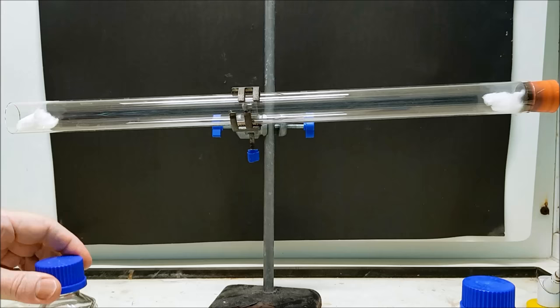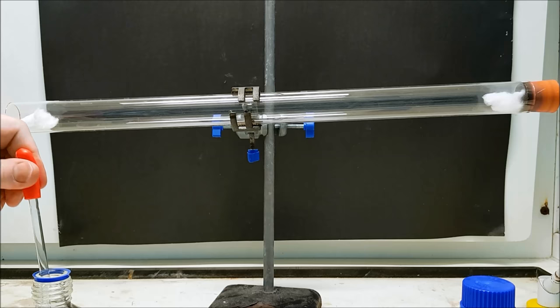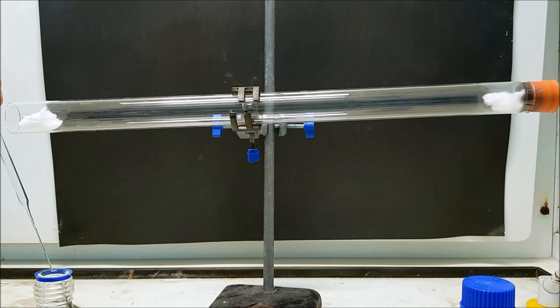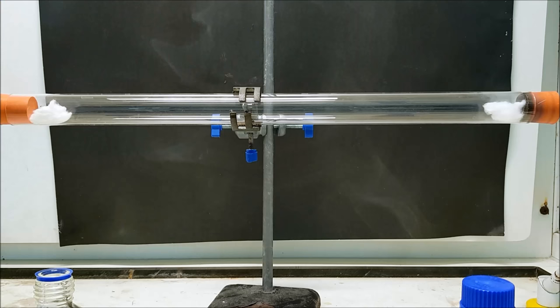Over on the left-hand side we've got some concentrated ammonia. Again, a milliliter or two. Close off the tube with the bung, make sure it's level and observe.